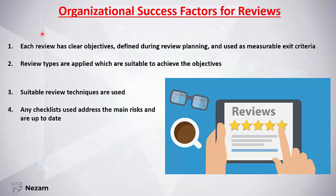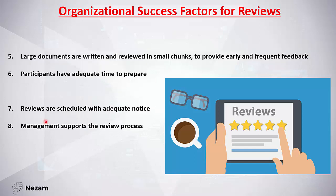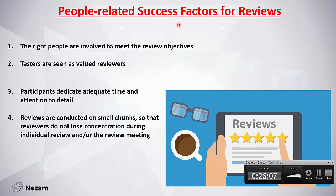The last part of Chapter 3 covers success factors for reviews. Organizational success factors include: each review should have clear objectives defined during planning, used as measurable exit criteria; review types applied should be suitable to achieve those objectives; suitable review techniques should be used; checklists should address main risks and be up to date; large documents should be reviewed in small chunks for early and frequent feedback; and participants should have adequate time to prepare. Management support is also essential.